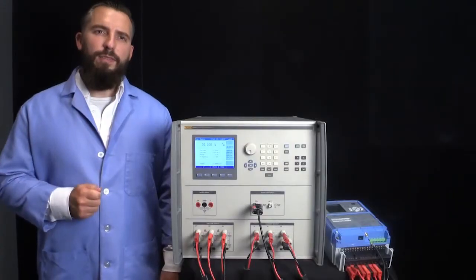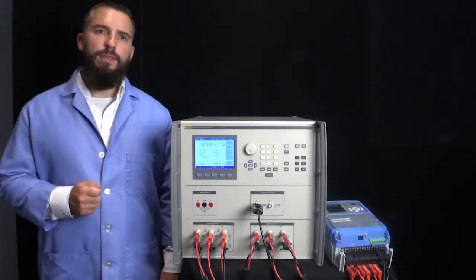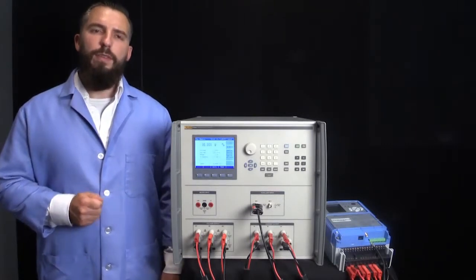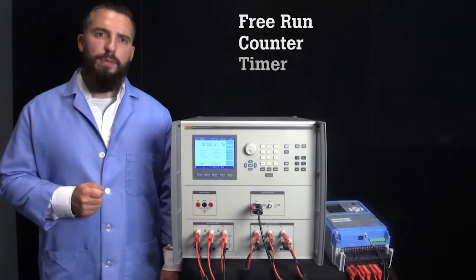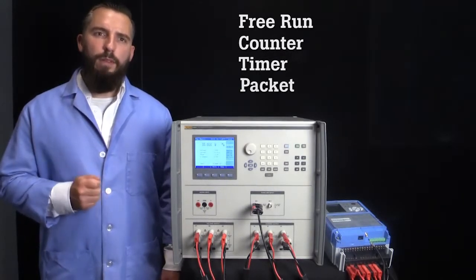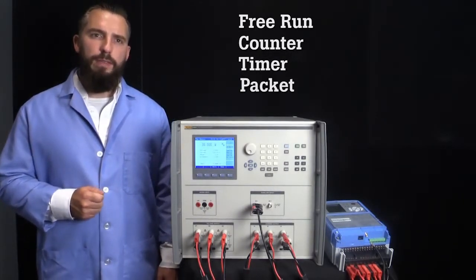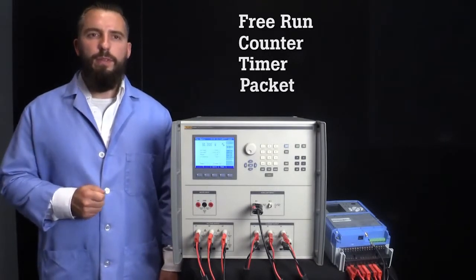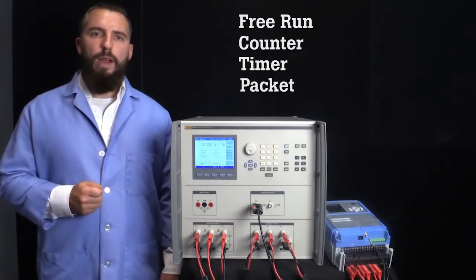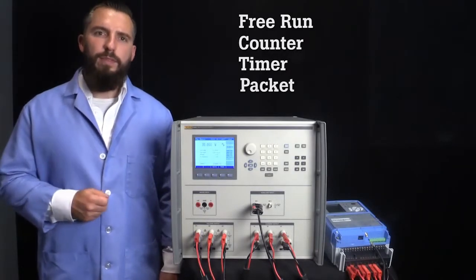The 6003A has four energy testing modes that allow you to test a variety of energy meters. Those modes are free run, counter, timer, and packet. All of these modes provide a way of easily configuring a test to output a precise power level. In return, the energy meter will provide a watt-hours measurement. Let's discuss these modes in more detail.